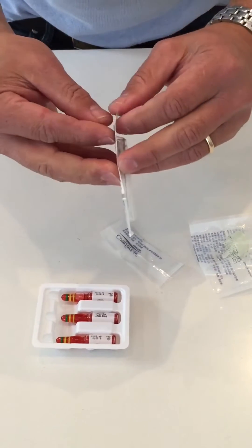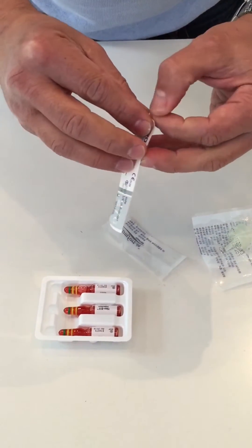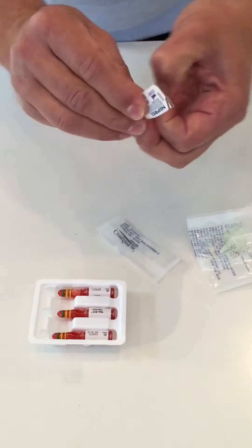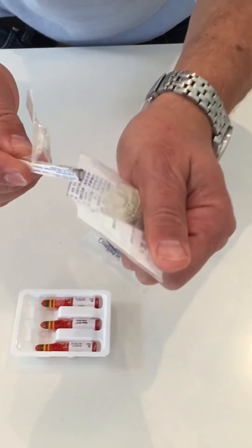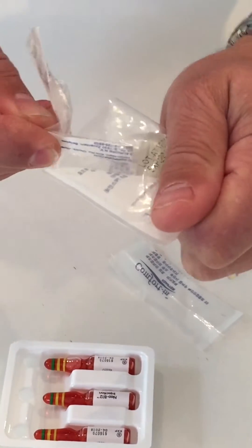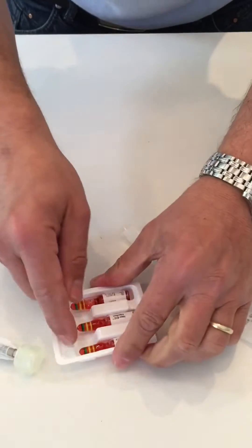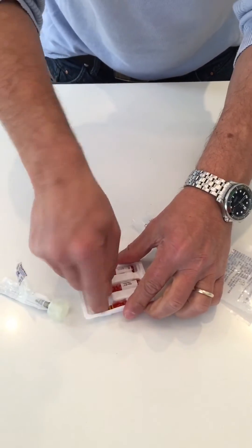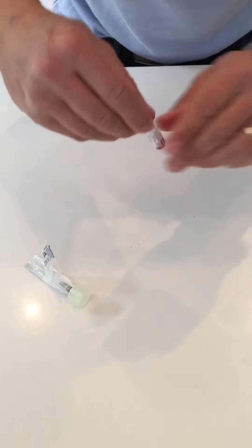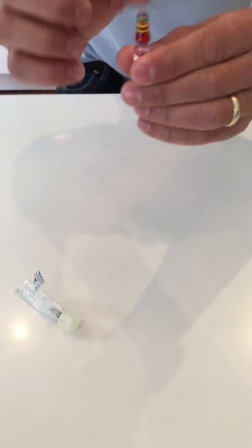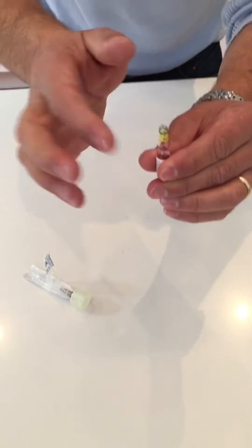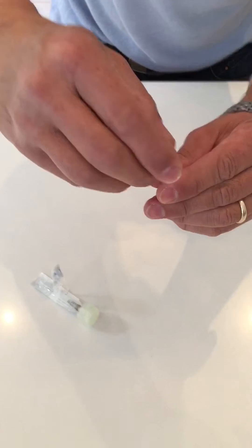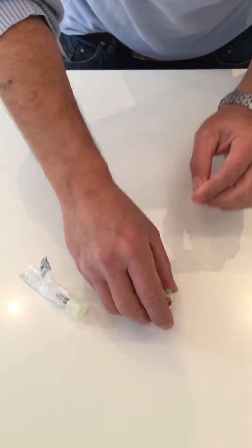The easiest way is to take a needle and attach it to a lure adapter, keeping the sterility. That's stage number one. We take one vial and flick it down a bit to get all the B12 into the bottom part.